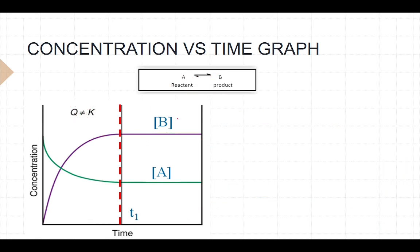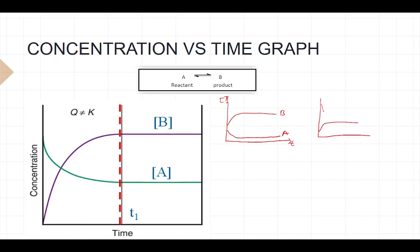The concentration versus time graph doesn't have to look just one way — there are three possible graph shapes, because different reactions have different concentrations at different times. So there are three possible graphs you may encounter. That is all for this topic — good luck.